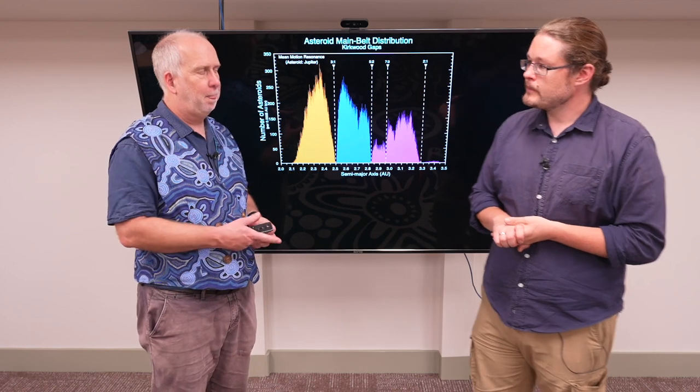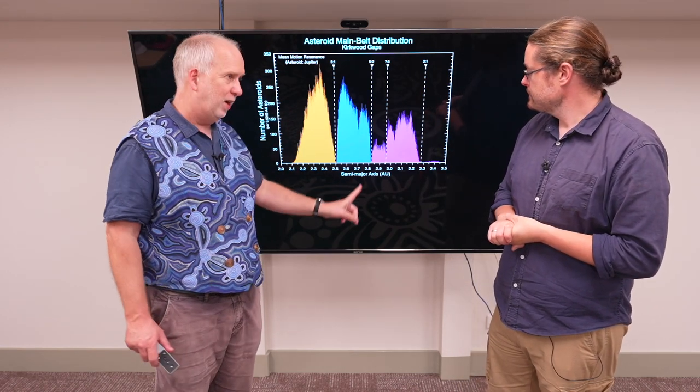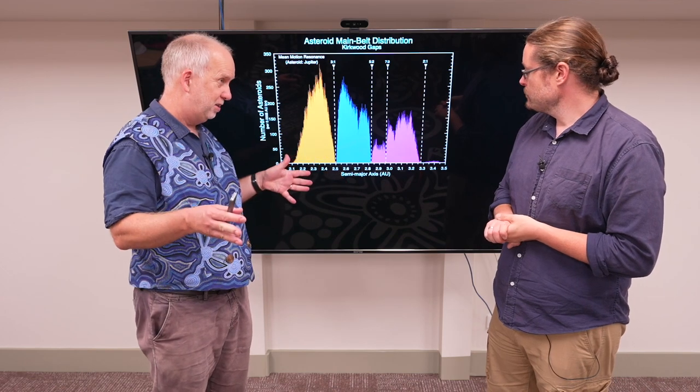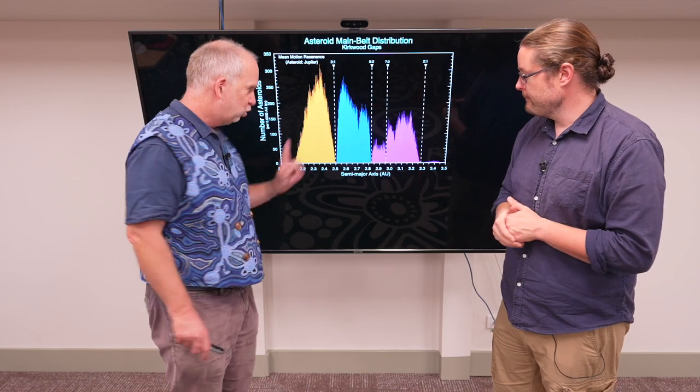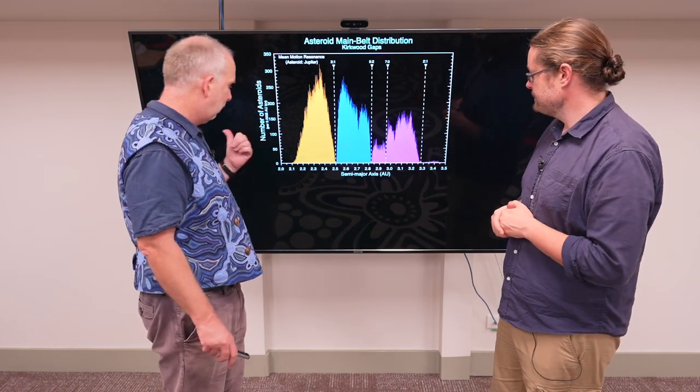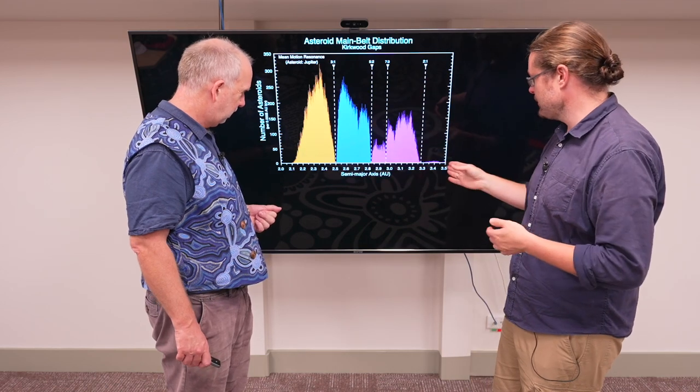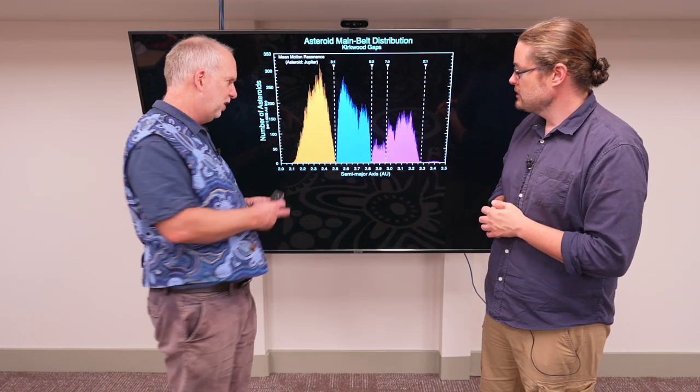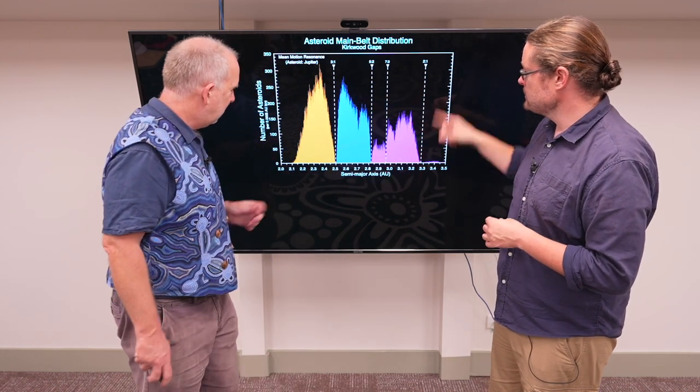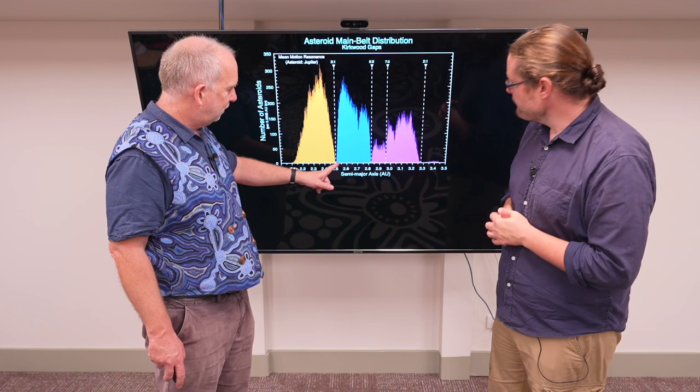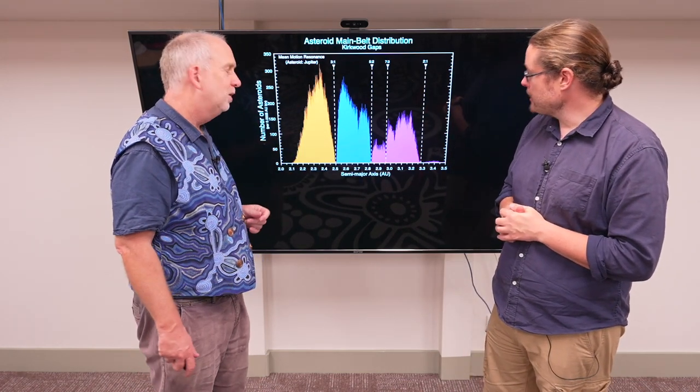Now the main belt, if you look at this—this is a semi-major axis, this is basically how far out the asteroid is. This is the number of asteroids. The Earth is at one astronomical unit. Jupiter's at five. Mars is about one and a half. So this is close to Mars, but not too close, and not too close to Jupiter. And what you can see is the asteroids are not spread uniformly over this range. There's very distinct groupings of them, and there are gaps. Very narrow gaps with no asteroids. These are called the Kirkwood gaps.